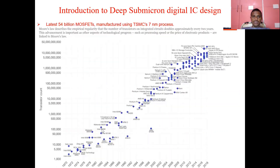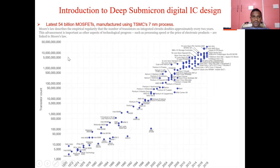We can also see that the latest development has 54 billion MOS bits placed on the silicon die, manufactured by Taiwan Semiconductor Manufacturing Company (TSMC) with a 7 nanometer process. The latest processor prepared by TSMC is 7 nanometers with 54 billion MOS bits.